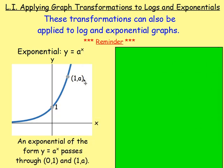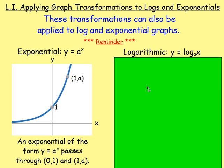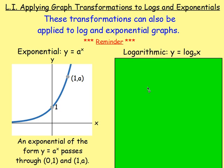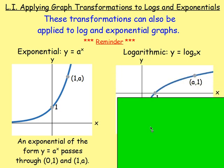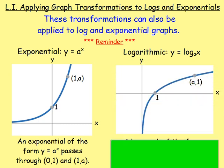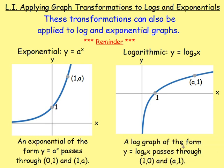So if it was 5 to the power of x, it would pass through (1, 5). The inverse of that is your logarithmic function: y equals log base a of x. Remember that's reflected in the line y equals x. Your log graph passes through the points (1, 0) and (a, 1). So if it was log base 7, it would pass through (7, 1). So that's your log graphs and your exponential graphs.